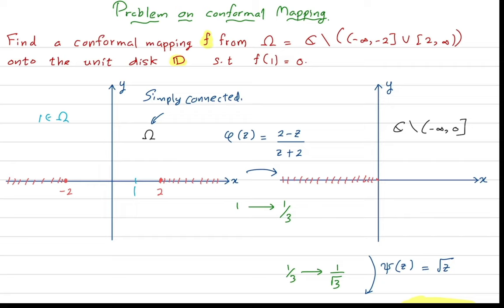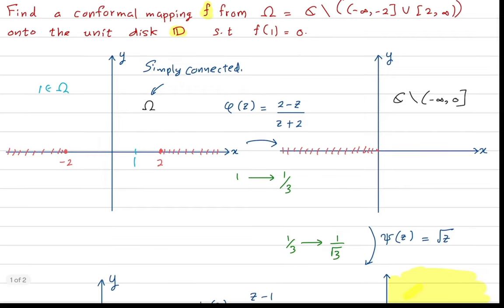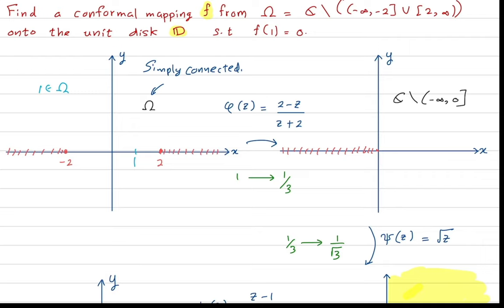What I would do first is send the point two to zero and minus two to infinity. For example, if you apply the Möbius transformation defined by one over z plus two, then minus two would go to infinity. I would then multiply by two minus z, so that two would be sent to zero.